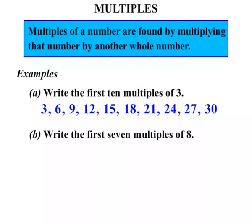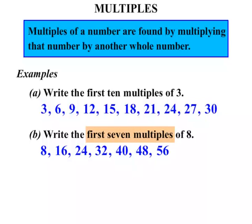Write the first 7 multiples of 8. So we go through our 8 times tables. 8 1's are 8. 8 2's are 16. 8 3's are 24. 8 4's are 32. 8 5's are 40. 8 6's are 48. And 8 7's are 56. We stop there because we only wanted the first 7 multiples.